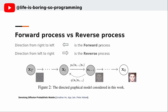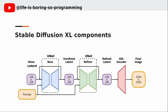We always talk about Stable Diffusion — what is a diffusion process? Diffusion is a process to add noise to the image over time. The diffusion process is the forward process. What we want to do is the reverse process — we want to turn some noise into an image. Next, we will see what are the components of SDXL.